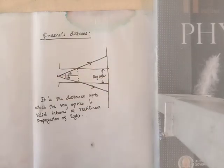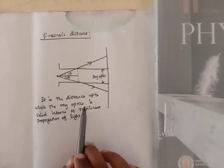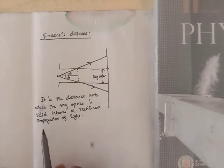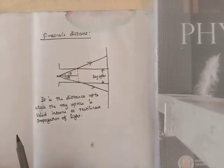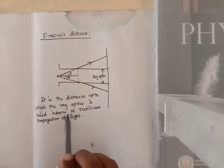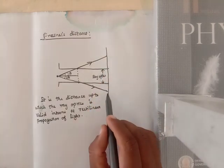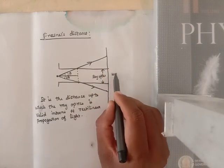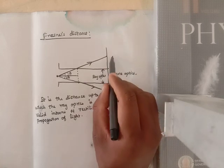Now I am going to teach frontal distance. Frontal distance means it is a distance up to which ray optics is valid in terms of rectilinear propagation of light. For this we take a source of light incident on a screen. Up to a certain point, ray optics is valid for rectilinear propagation of light, and beyond that point, wave optics is obeyed.